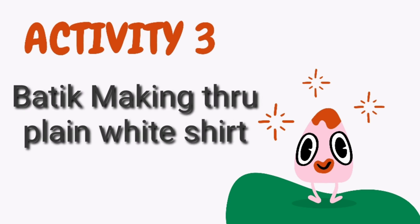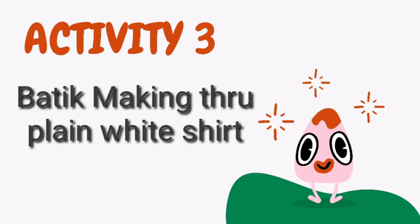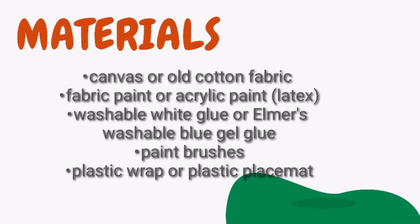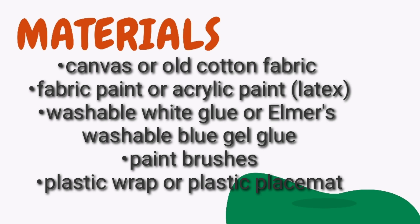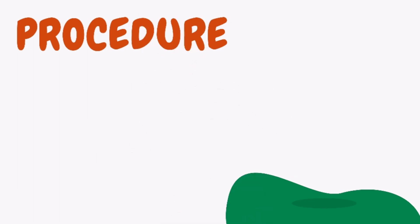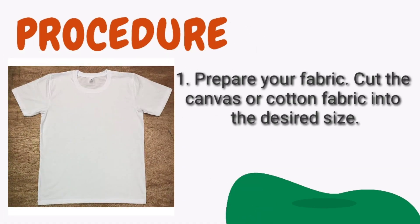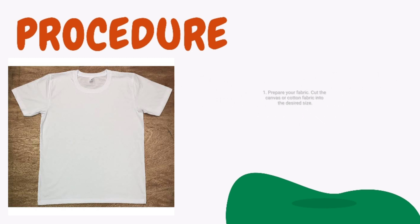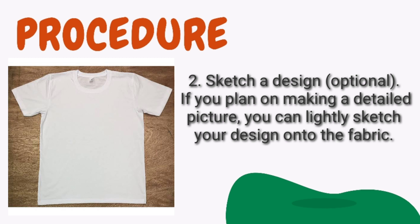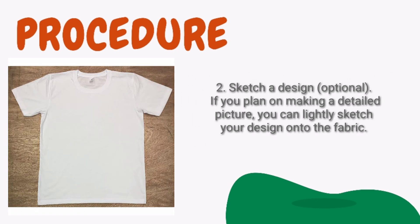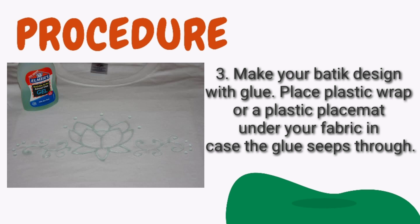For our third activity, we will make a batik using a plain white t-shirt. These are the materials: canvas or old cotton fabric, fabric paint or acrylic paint, washable white glue, paint brushes, and plastic wrap or plastic placemat. First, prepare your fabric — cut the canvas or cotton fabric into the desired size. Second, sketch a design. If you plan on making a detailed picture, you can lightly sketch your design on the fabric.